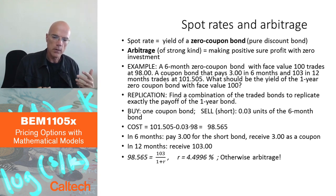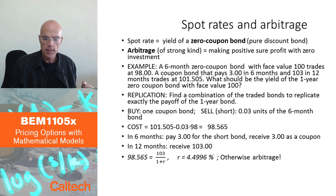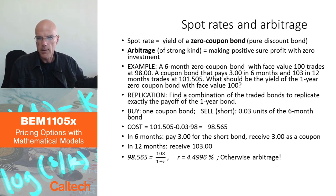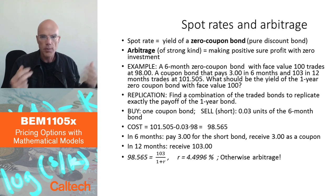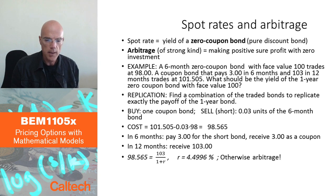Then I apply the law of one price: if I can create the same payoff in a different way, the price must equal the cost of creating that payoff. And if I know the price, I can compute the yield. That's the replication idea.